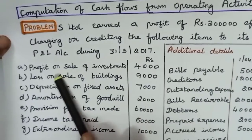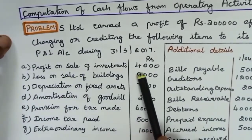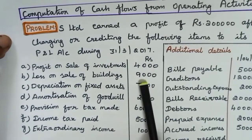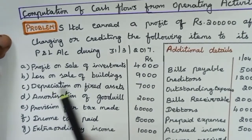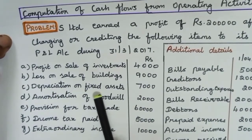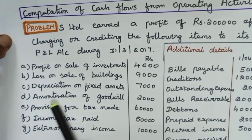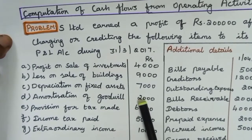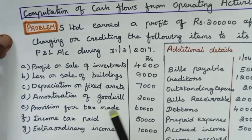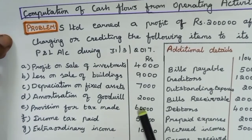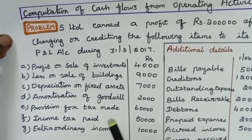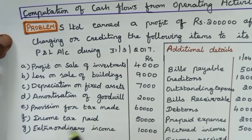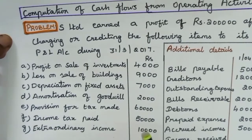Profit on sale of investment 4,000; loss on sale of buildings 9,000; depreciation on fixed assets 7,000; amortization of goodwill 2,000; provision for tax made 60,000; income tax paid 50,000; extraordinary income 10,000.